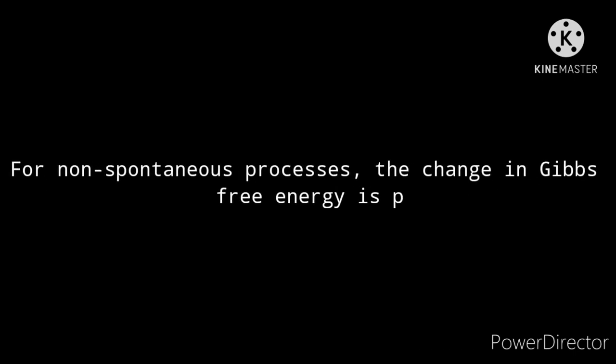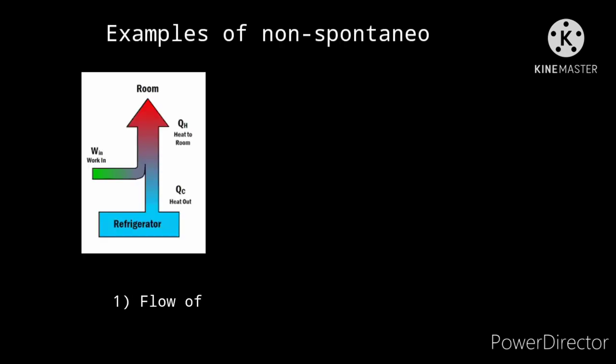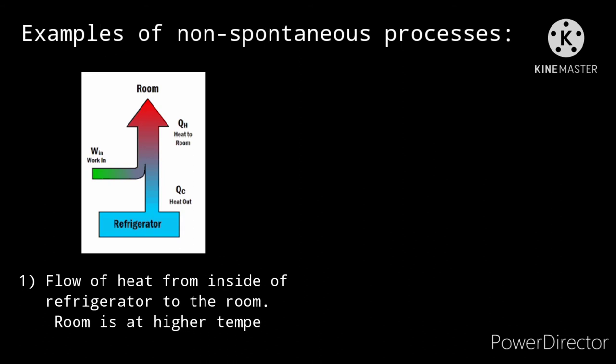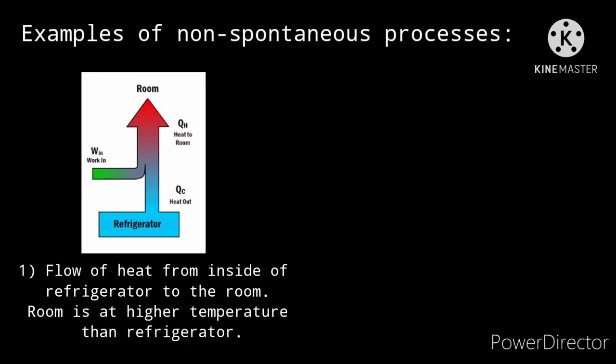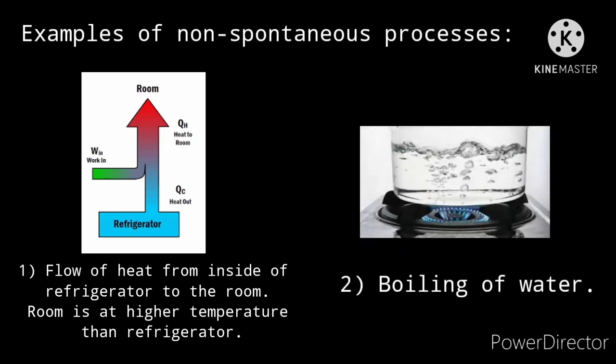For non-spontaneous processes, the change in Gibbs free energy is positive. Examples of non-spontaneous processes: 1. Flow of heat from inside a refrigerator to the room — the room is at a higher temperature than the refrigerator. 2. Boiling of water.